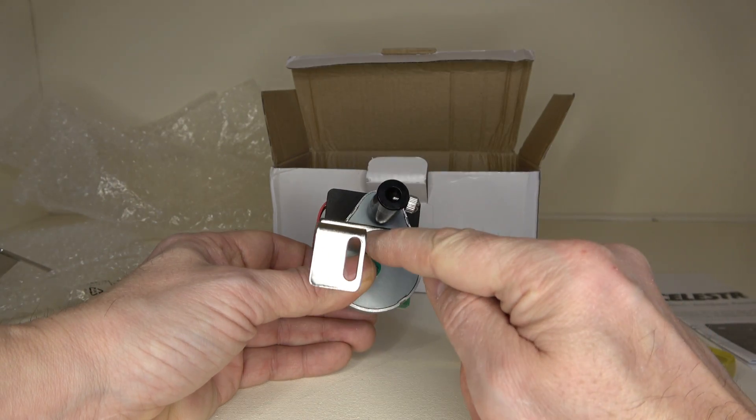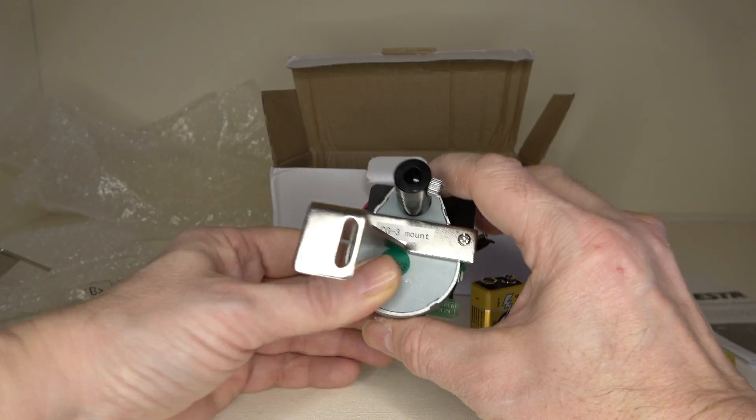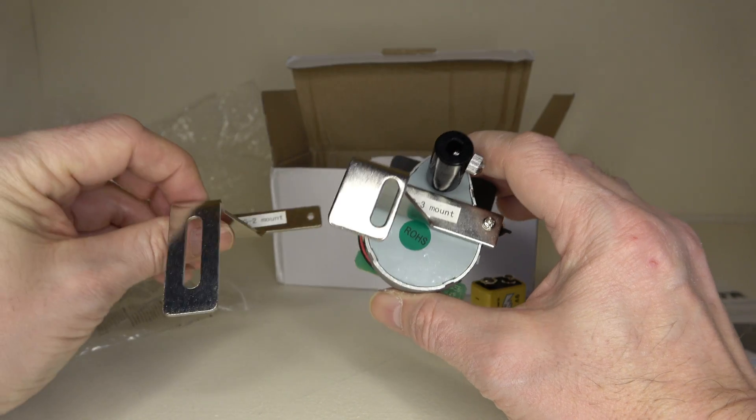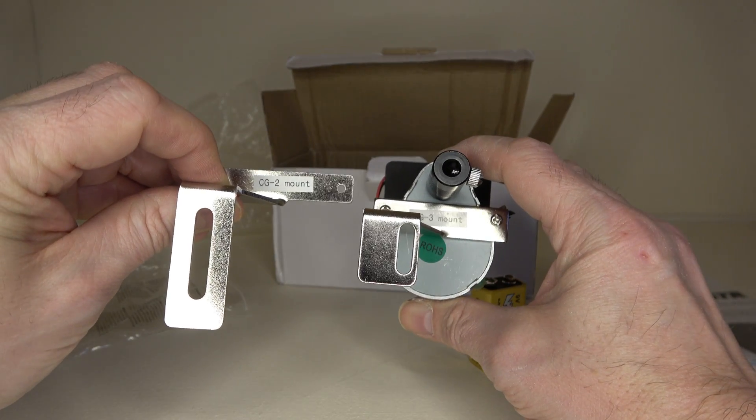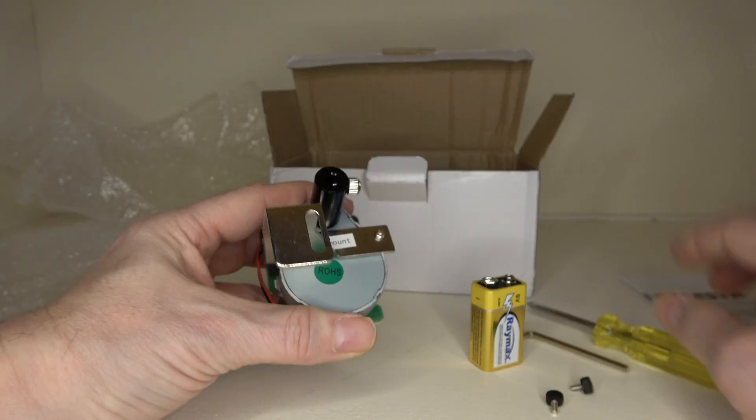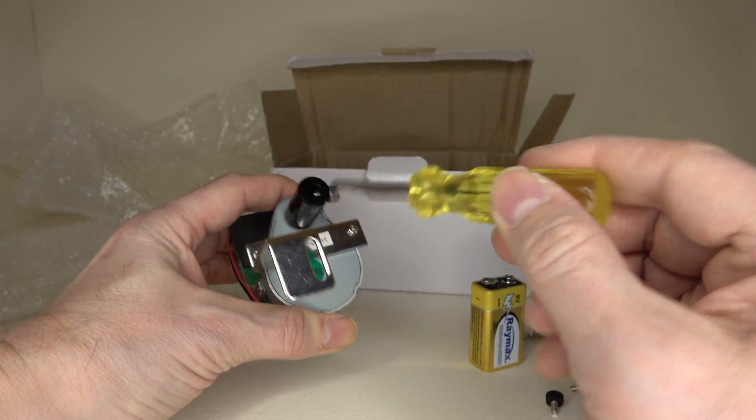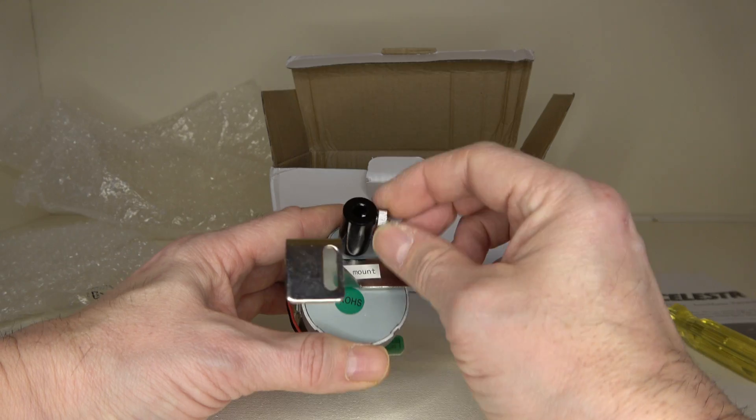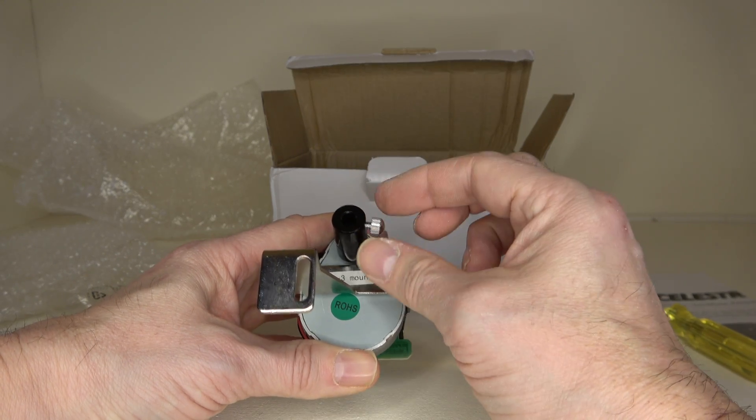This bracket is for the CG3 mount, and the other bracket is for the CG2 mount, depending on which mount you have on your telescope. I'm going to go with the CG3 mount, and that's why you have the screwdriver, because you may need to swap the bracket around. You'll notice in here this is what connects it to the slow motion controller.